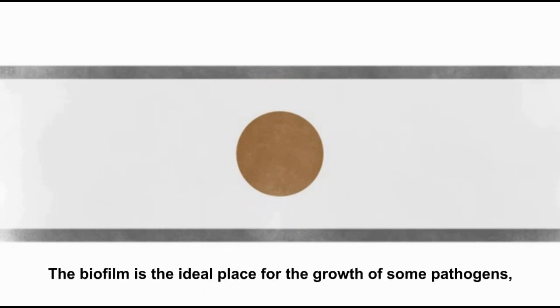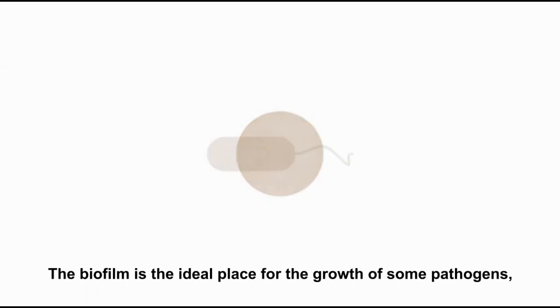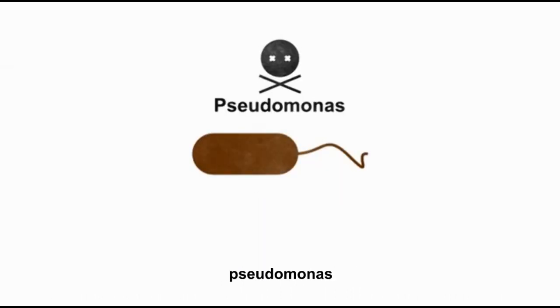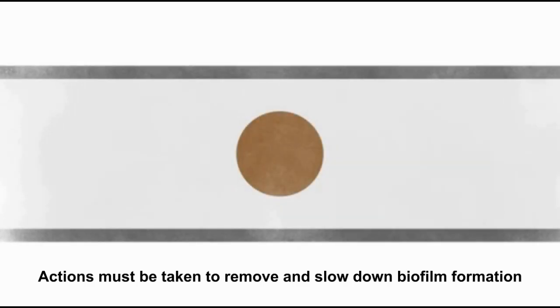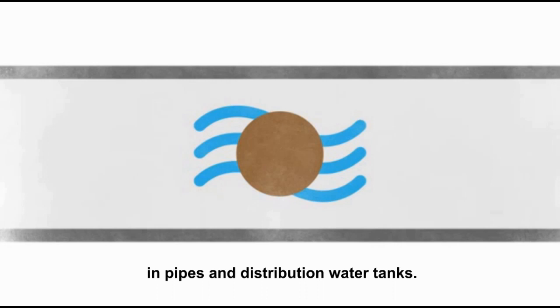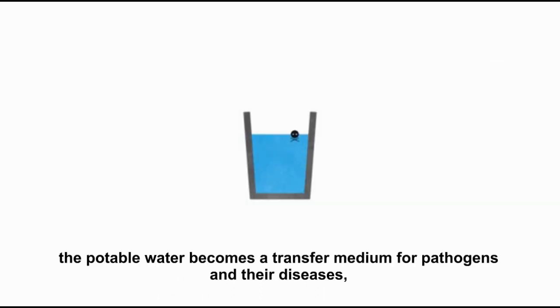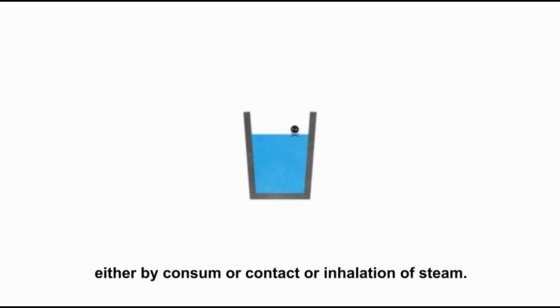The biofilm is the ideal place for the growth of some pathogens such as Legionella, Pseudomonas, and Escherichia coli. Actions must be taken to remove and slow biofilm formation in pipes and distribution water tanks. Each time the biofilm flows, the potable water becomes a transfer medium for pathogens and their diseases, either by consumer contact or inhalation of steam.